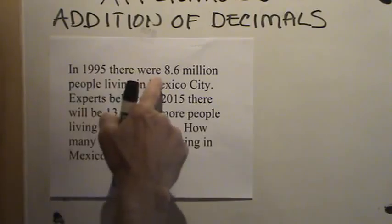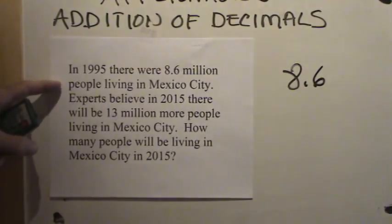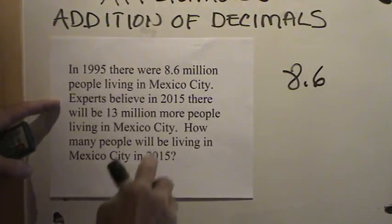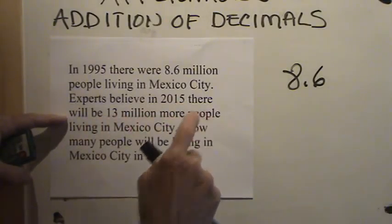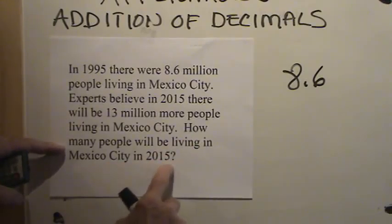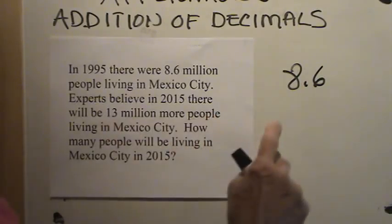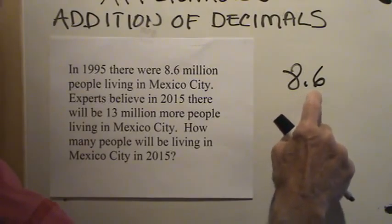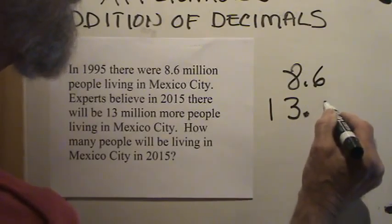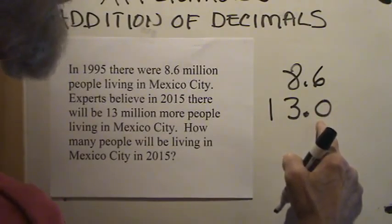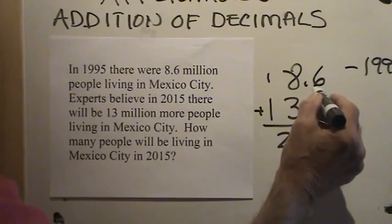In 1995, 8.6 million people were living in Mexico City, and the experts are saying that in 2015 there will be 13 million more people. So we have to add 13 million to the 8 and 6-tenths million. Now, 13 million is a whole number, but we can put a filler there. We put the decimal point after the whole number so we line up the decimals, and now we just add.